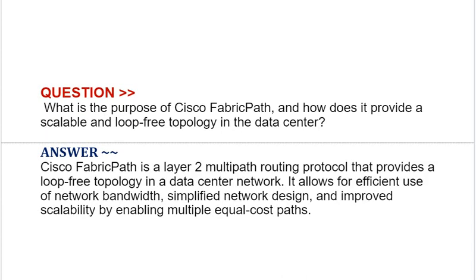Our next interview question is: What is the purpose of Cisco Fabric Path and how does it provide a scalable and loop-free topology in the data center? Your answer should be: Cisco Fabric Path is a layer 2 multi-path routing protocol that provides a loop-free topology in a data center network. It allows for efficient use of network bandwidth, simplified network design, and improved scalability by enabling multiple equal-cost paths.